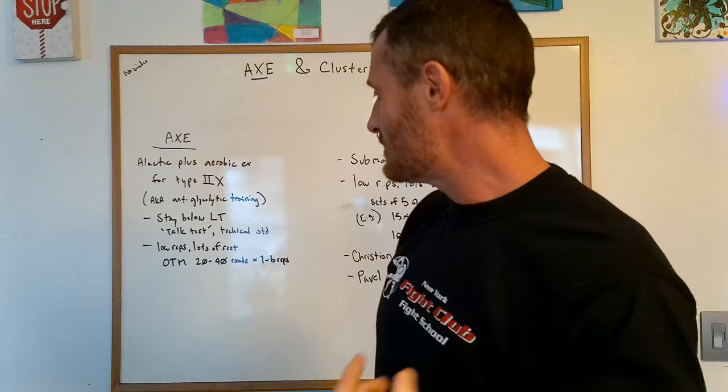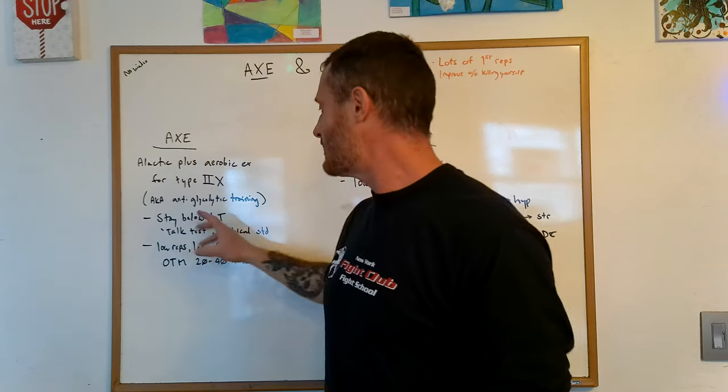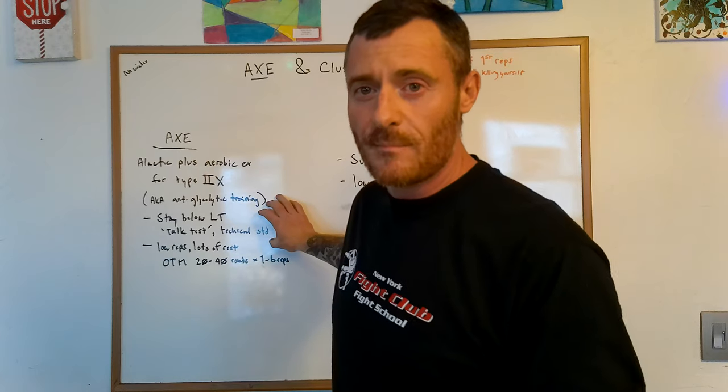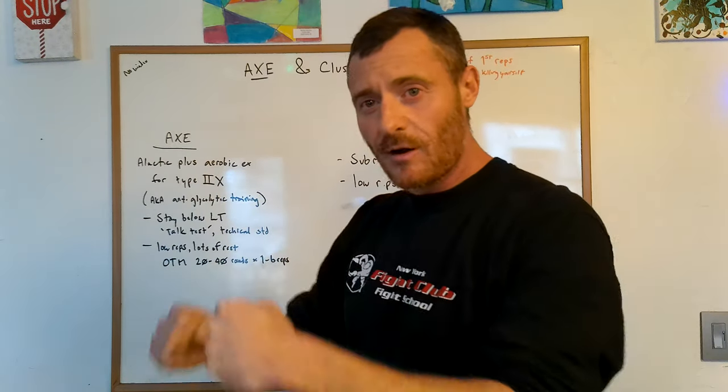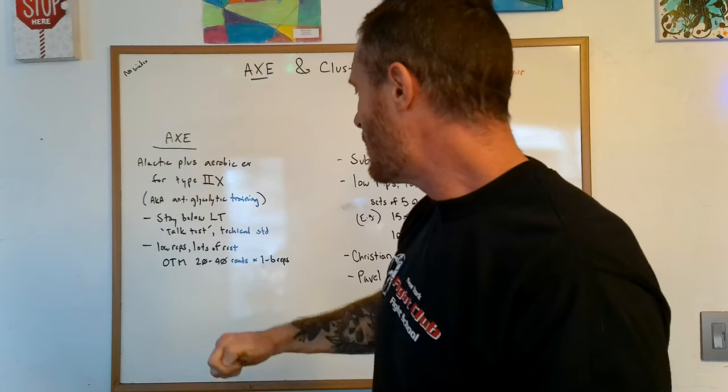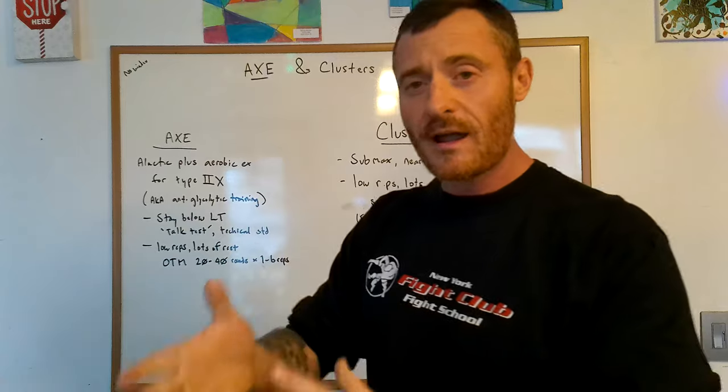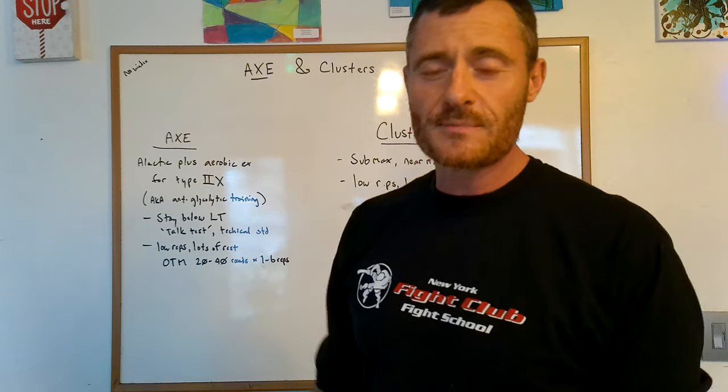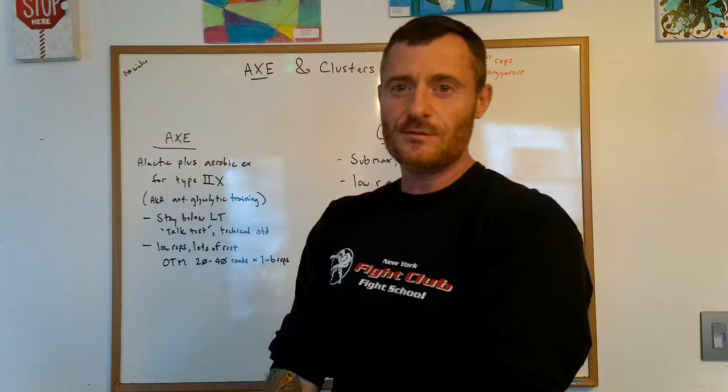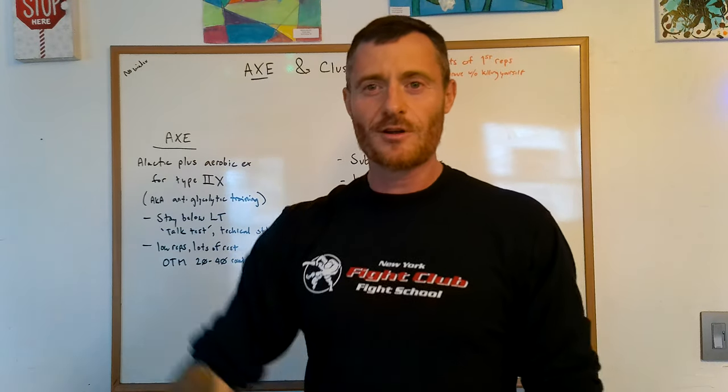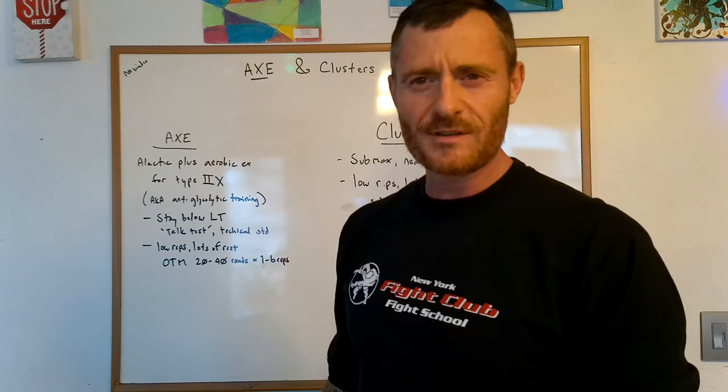Talk test, technical standards. So why else do we want to stay anti-glycolytic? We don't want to go to a muscular failure or a technical failure. We want good technique, good power, good speed, good output. Low reps, lots of rest, on the minute, 20 to 40 rounds, one to six reps. Why is it one rep? Well, if you're doing a double hand swing, that's one rep, right? You can't do a single arm swing one rep. You have to do both sides. I just train one side? That'd be weird.